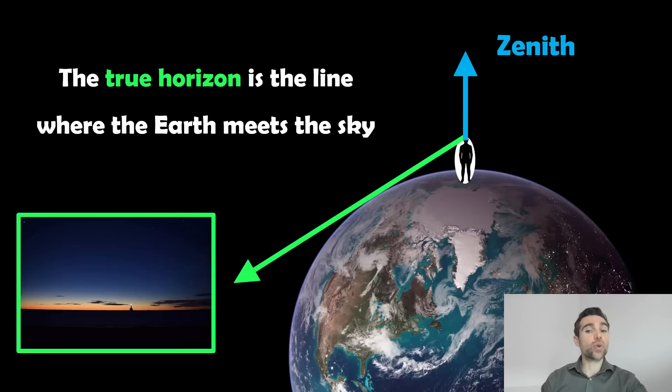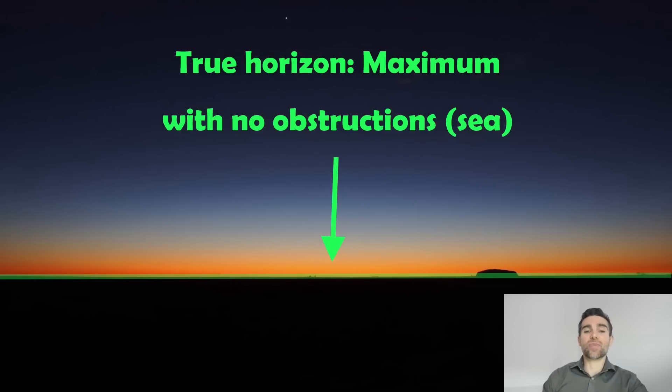So, the true horizon then, this is basically where the Earth meets the sky. So if we look out into the distance, this would be where the Earth and the sky meet, that would be our true horizon. Now, it's really only kind of applicable if we look out at the ocean, if we go to the coast basically, look out to the sea and the ocean, where the Earth meets the sky, that's pretty much going to be our true horizon.